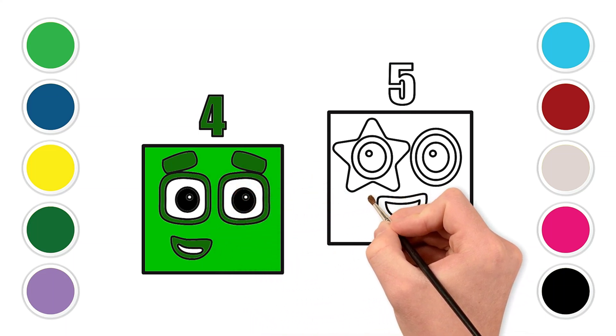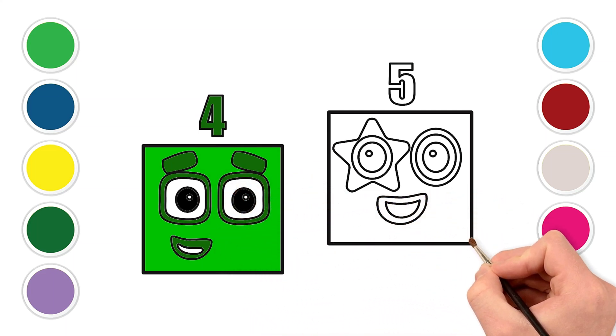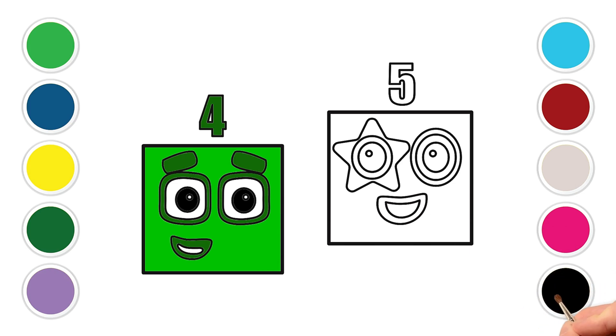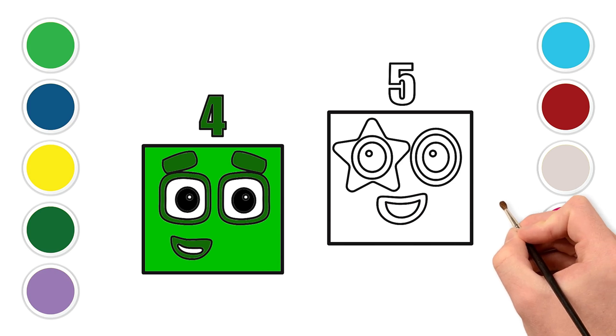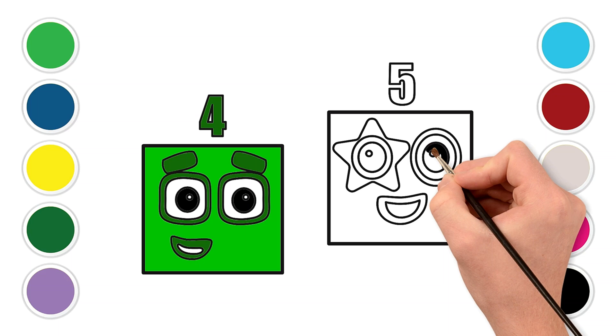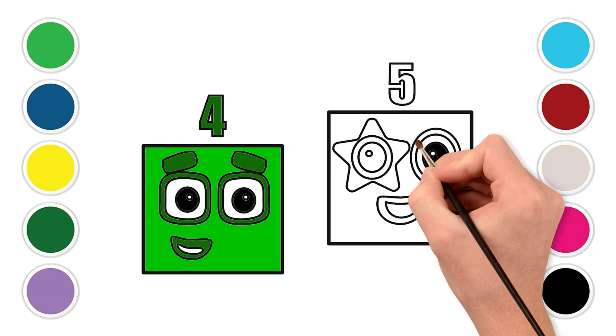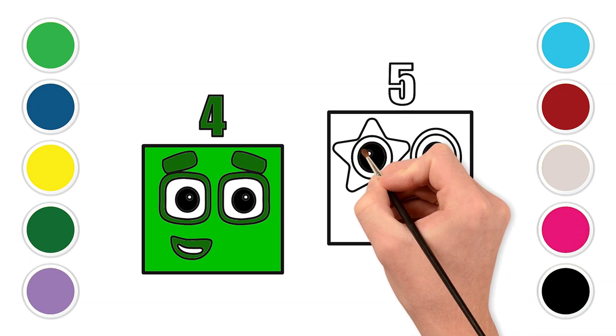Coloring number block five. First, color the inside of both eyes black. B-L-A-C-K. Yay!